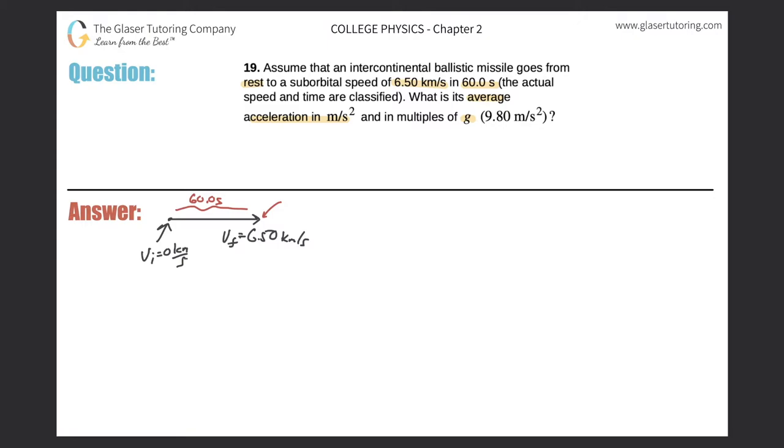Now it says what is the average acceleration? So what's the formula for acceleration? The formula for acceleration is acceleration equals the change in velocity divided by the change in time. So in order for me to find the acceleration, I need to know the change in the velocity and the time in which that change in velocity occurred. And we do, right? We know those things, so we can calculate the average acceleration.